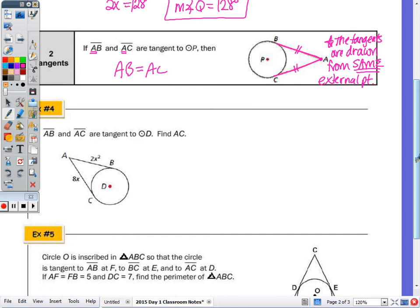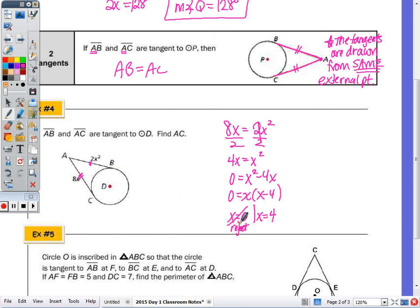Question four: AB and AC are tangent to circle D. Find length AC. These segments are congruent, so 8X = 2X². Dividing by 2: 4X = X². Factoring: X² - 4X = 0, so X(X - 4) = 0, giving solutions 0 and 4. Rejecting 0 since it would give zero length, X = 4. Checking: 2(4²) = 32 and 8(4) = 32. Length AC equals 32.